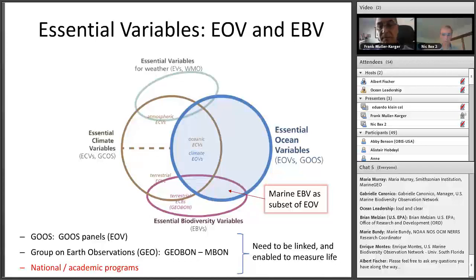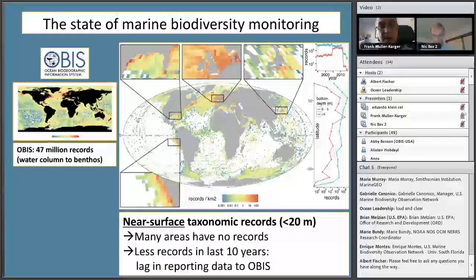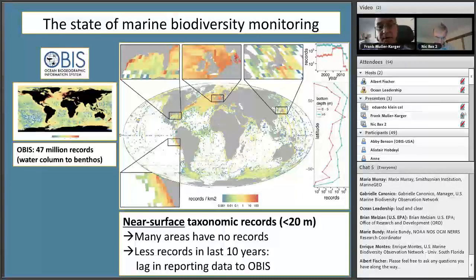We have the GOOSE efforts organized under the IOC, and the Group on Earth Observations — GEOBON — where we sit as MBON, trying to coordinate with GOOSE, along with all the national academic programs also making measurements. Ideally we would like to see how we organize all of this and share information. Here's an example of what concerns me: on the left-hand side you see a global picture of the 47 million records that OBIS has, going back over a hundred years. On the right-hand side, exploring the OBIS database, we see the gaps we're trying to address with GOOSE, MBON, and OBIS. There is a lot of the ocean that is still gapping in terms of observations, and the number of observations decreases sharply after about 2010.